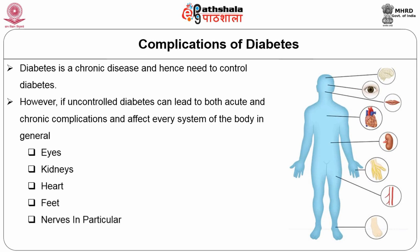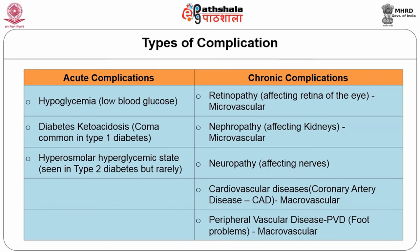Diabetes is a chronic disease — it doesn't happen overnight. One has to live with it 24/7, 365 days a year. Being a chronic disease, it needs to be controlled. If uncontrolled, both acute and chronic complications can affect almost every system of the body.